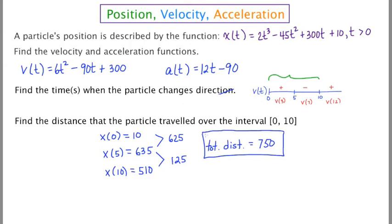Very quickly, if you didn't consider the fact that the particle stopped at 5 seconds and changed direction, you might be inclined to say the particle started here at 10 and ended here at 510, so the distance traveled is 500. And that's just not right. It went this far to the right and this far to the left, and you add those up and you get a total of 750.